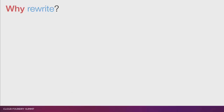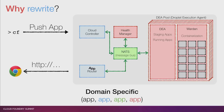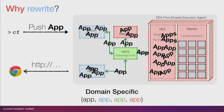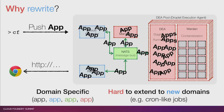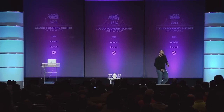Another thing we've found with the current runtime is that it's very domain-specific. Cloud Foundry is all about apps — apps, apps, apps — and everything in the system knows you're talking about apps. That's fine until you want to extend to a new domain. For example, a cron-like job where you just want something to run every now and then — that's really not an app. It's a different sort of thing. This makes it hard to extend our platform.